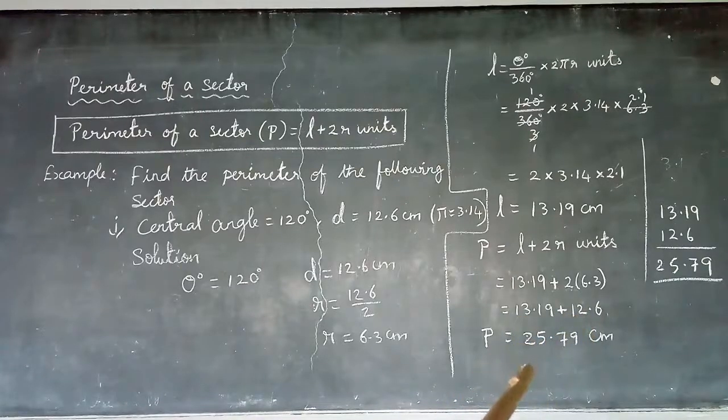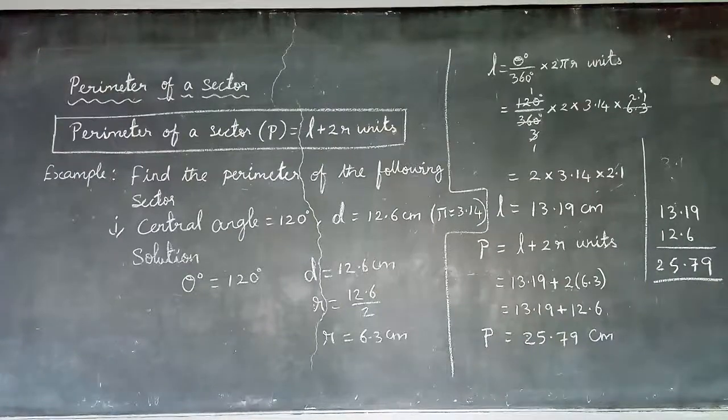For two into R, diameter equals 2R, so we can get that value. After adding, we will get the perimeter. Try different sums.